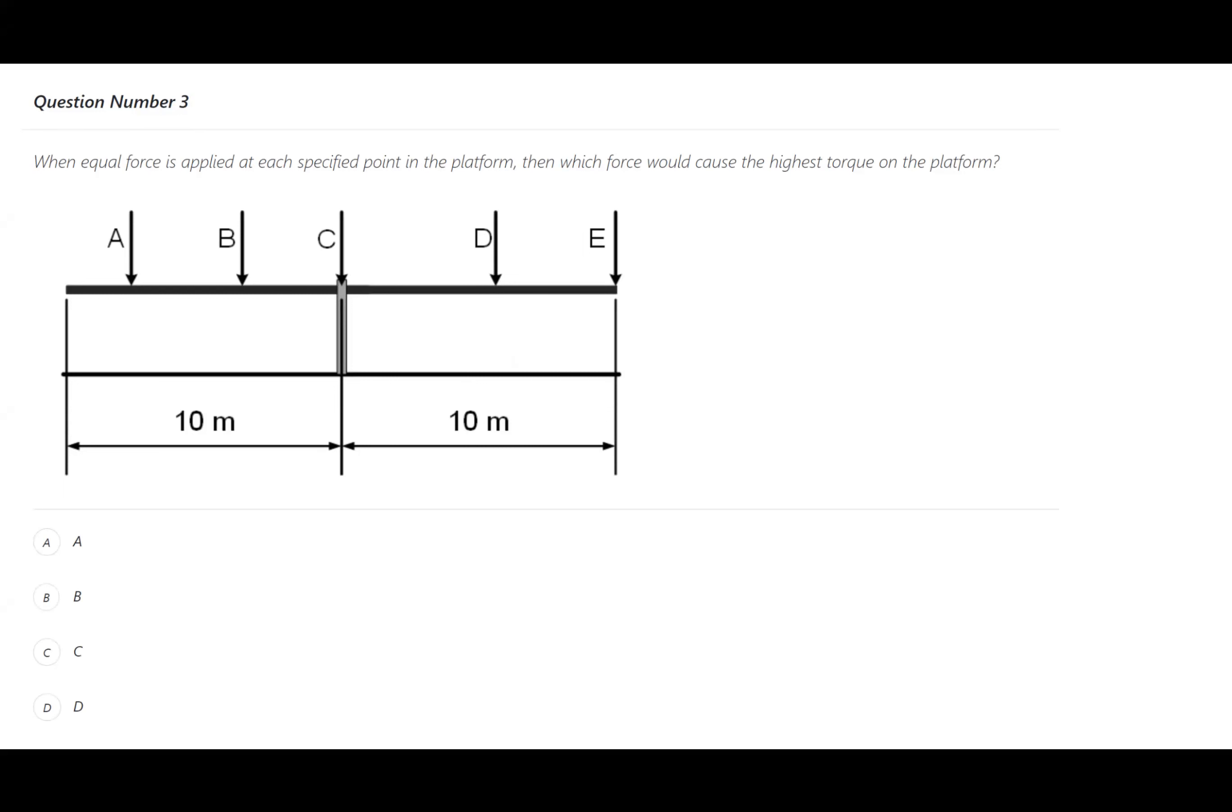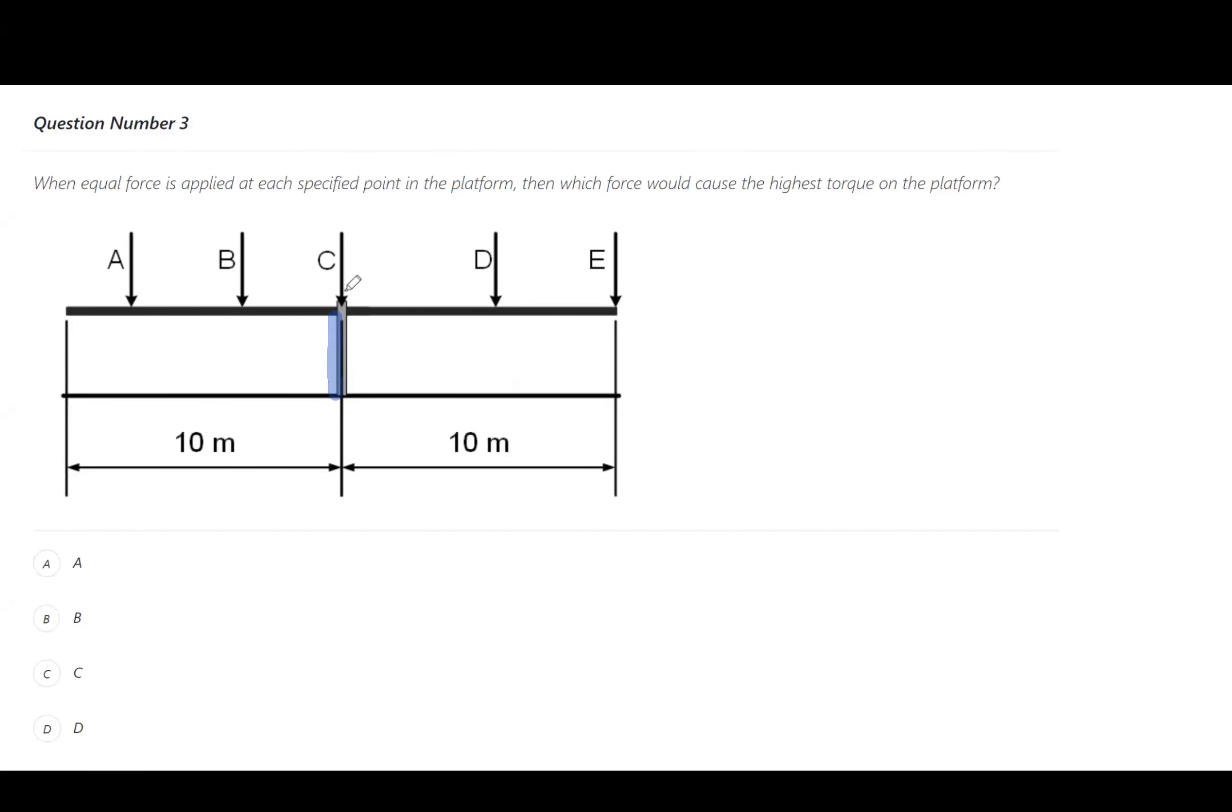So this diagram here is like a seesaw, so this is like the pivot point or the balance here and then this is your beam across the top.